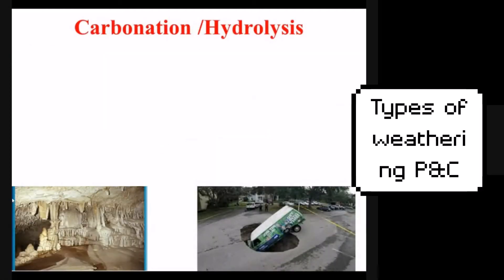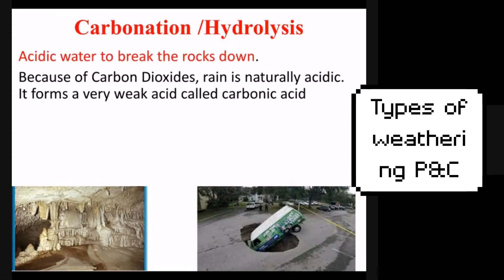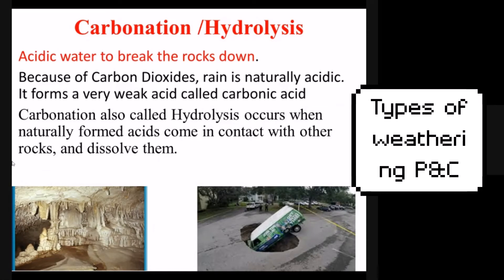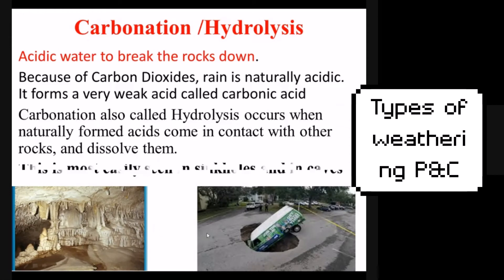The second type of chemical weathering is often called carbonation or hydrolysis, and that's where acidic water breaks rocks down. Acidic water is actually very common because rain on earth, when it interacts with the carbon dioxide in our atmosphere, turns into slightly acidic rain — often called carbonic acid. Over long periods of time, hundreds or thousands of years, that slightly acidic water can eat into limestone or marble and cause caves or even sinkholes. This is common where you have lots of limestone and lots of water, like Florida, and also higher temperatures, which speed up the acid's effect on rocks.